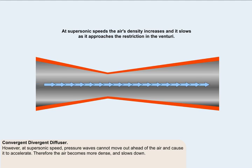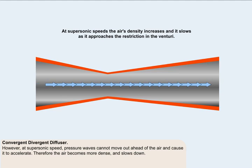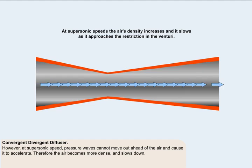Therefore, the air becomes more dense and slows down. This is still all in accordance with Bernoulli's equation which tells us that if the static pressure increases and the density increases, then the velocity must decrease in order to keep the total energy in the airflow constant. To most people, this tendency of supersonic airflow is more intuitive than what happens in subsonic airflow.